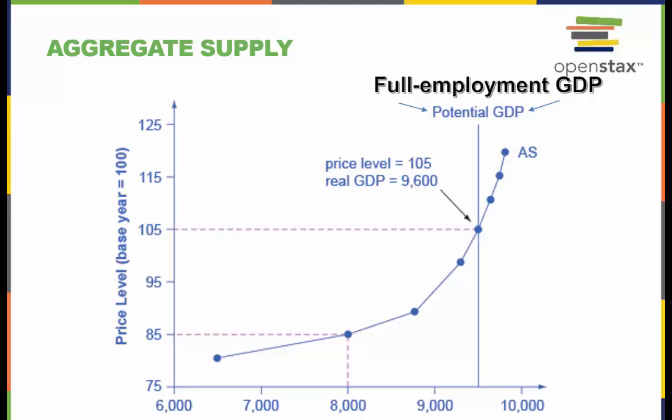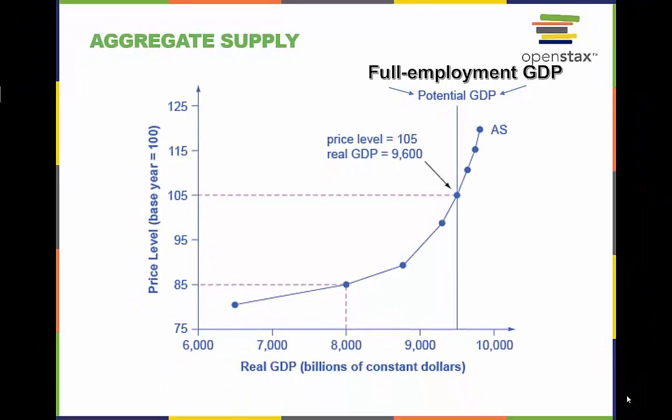We will begin with aggregate supply. Aggregate supply, or AS, slopes up because as the price level of output rises with the price of inputs remaining fixed, firms have an incentive to produce more and to earn higher profits. The potential GDP line shows the maximum that the economy can produce with full employment of workers and physical capital. This is often called full employment GDP.